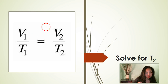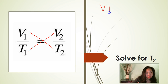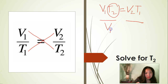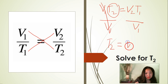Now solve for T2. Again, get rid of the denominators by cross multiplying. V1 times T2 is equal to V2 times T1. Now isolate T2 by dividing both sides of the equation by V1. Cancel V1. That leaves us with T2 is equal to V2 times T1 divided by V1.